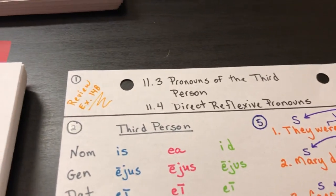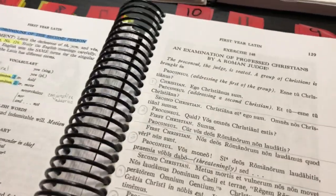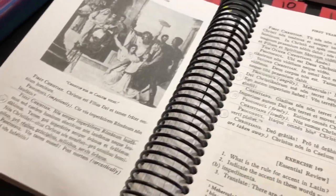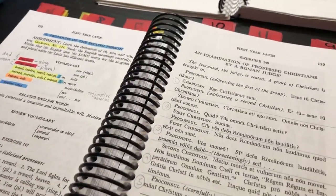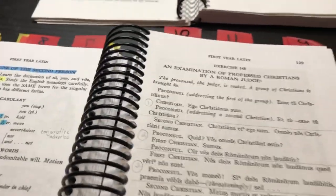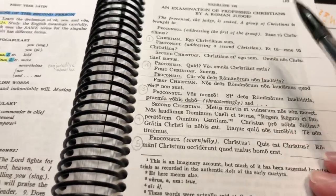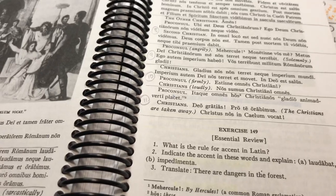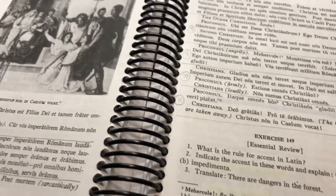Before we got started, I wanted to review exercise 148. That is the one in the book that we had divided up into 11 different sections and each student was responsible to translate their portion. They read through this entire story, each person taking their turns. It was kind of fun to hear the overall story, but they didn't have to do the full translation because that would have been way too much.